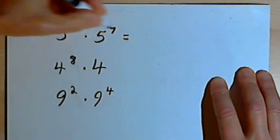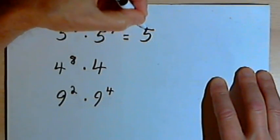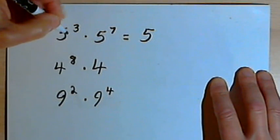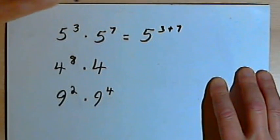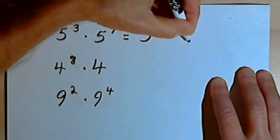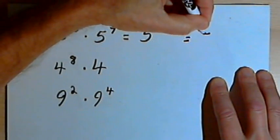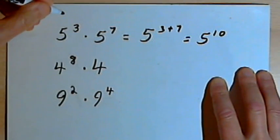When I multiply that out, since the bases are the same, the base will remain the same. That's 5. And my new exponent is going to be whatever I get when I add 3 plus 7. 3 plus 7 is 10. So that's 5 to the tenth.